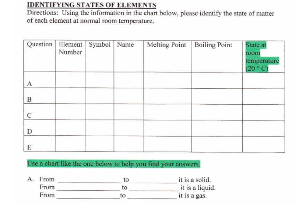In my chart, I'm going to start filling out my information. My element number for carbon was 6, my symbol was a capital C, and my name is carbon. Now I need to write my melting point, which was 3,500 degrees Celsius — capital C for Celsius. And my boiling point was 4,027 degrees Celsius. I don't know what state of matter it is at 20 degrees Celsius yet — I've got to wait.